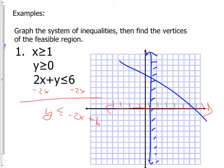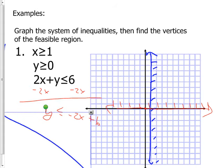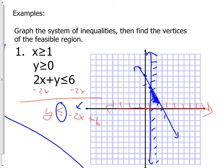I'm going to finish this one for you. This line should start at 6 on the y-axis — one, two, three, four, five, six — right there. It has a slope of −2, so fall 2, run 1, fall 2, run 1. Then shade below since it says 'less than.' Your final answer is that little triangular area, and in a real-world problem the answer would come from one of those three vertices.